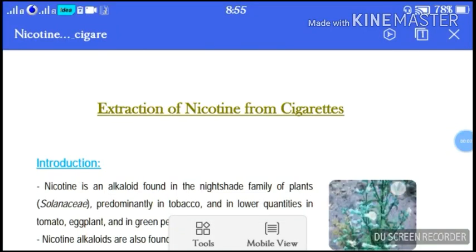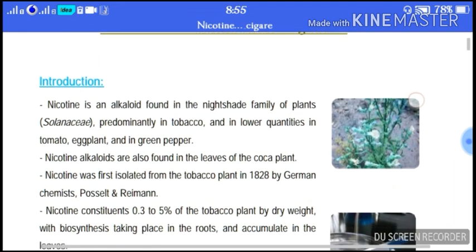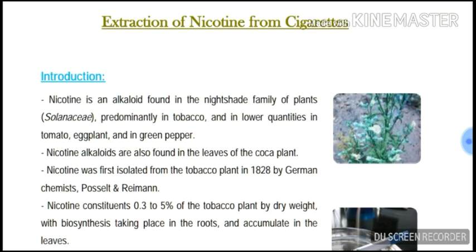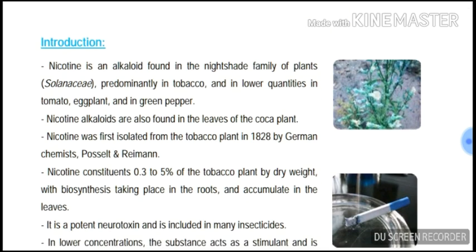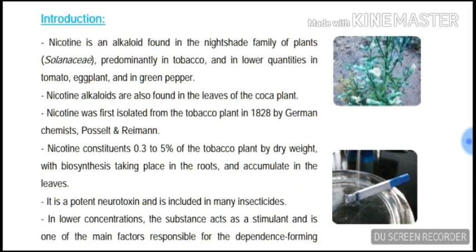Nicotine extraction: introduction. Nicotine is an alkaloid found in the nightshade family of plants (Solanaceae), predominantly in tobacco, and in lower quantities in tomato, eggplant, and green pepper. Nicotine alkaloids are also found in the leaves of coca plants. Nicotine was first isolated from the tobacco plant in 1828 by German chemists Posselt and Reimann.